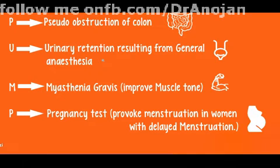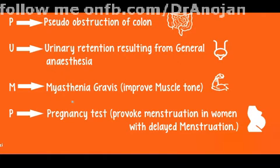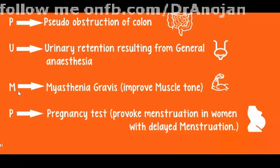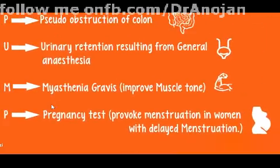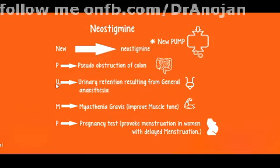Neostigmine relaxes the sphincter via the parasympathomimetic system, so it is used in urinary retention and pseudo-obstructive colon. In myasthenia gravis, antibodies are produced against acetylcholine receptors. Neostigmine inhibits acetylcholinesterase breakdown, increasing acetylcholine concentration at the postsynaptic membrane, and is therefore used in myasthenia gravis. The 'P' in the mnemonic also stands for pregnancy test.